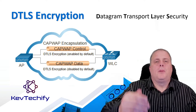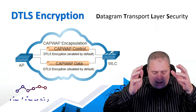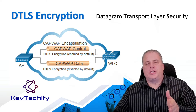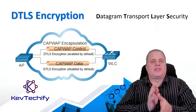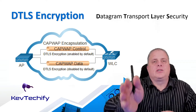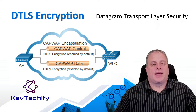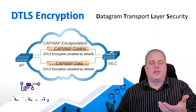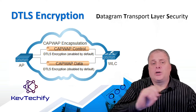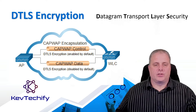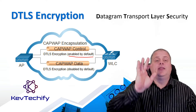DTLS is additional security beyond what the traditional lightweight access point and wireless LAN controller setup provides. There are two CAPWAP channels: the control channel and the data channel. The control channel carries configuration — how the wireless LAN controller tells the access point how to configure itself. The data channel carries all user data, such as when you're connected with your smartphone and you open a web page. Encryption for the CAPWAP control channel is enabled by default, so all configuration data between the access point and the wireless LAN controller is encrypted.